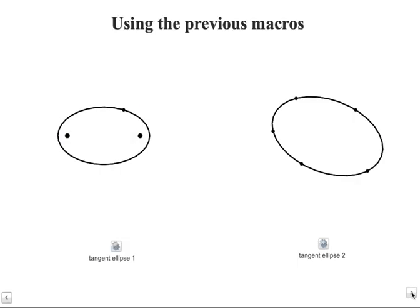Let us use these macros here. So let us use this macro tangent ellipse one. If we click here, here, here, and here to define the ellipse and a point, we have the tangent line here.